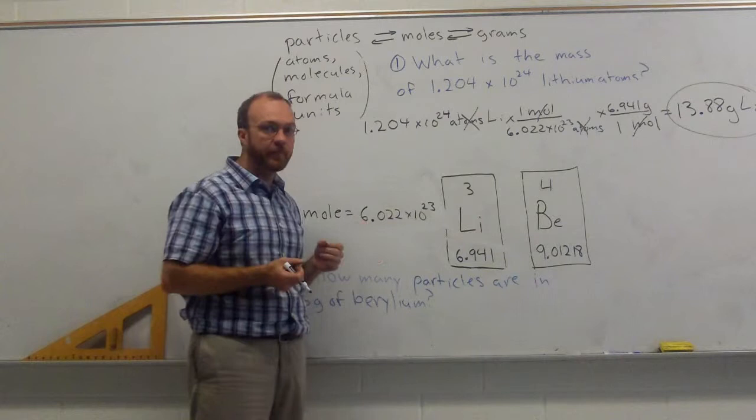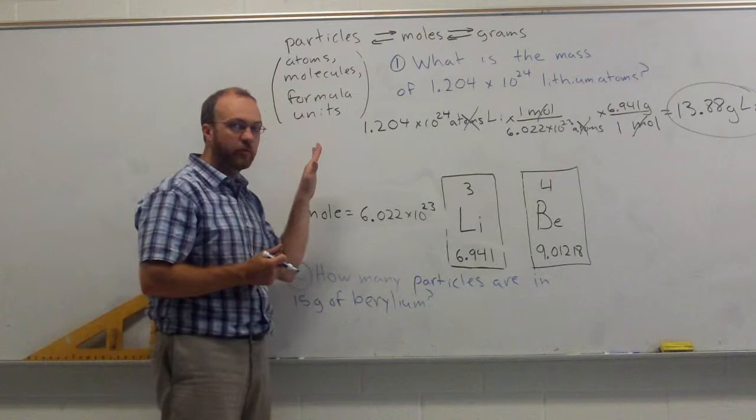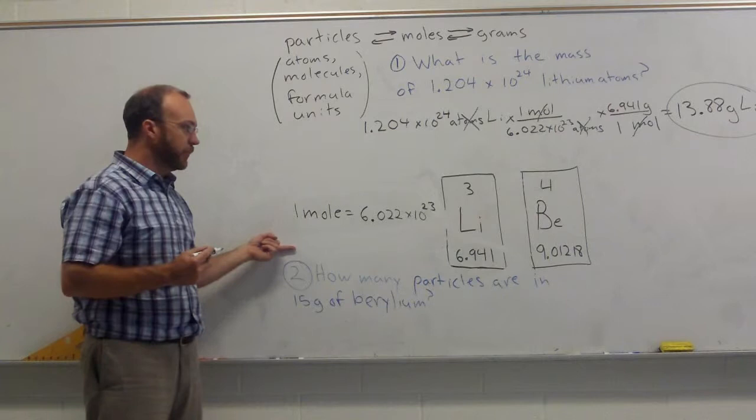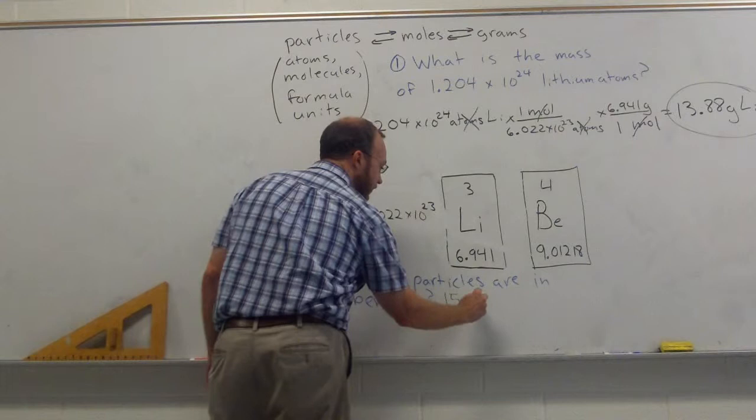You can also do that in the exact opposite order. So in our second example, we're going to start with a mass, grams, and we're going to go back to particles. Now, how many particles are in 15 grams of beryllium? Again, start with what you are given. 15 grams of beryllium.